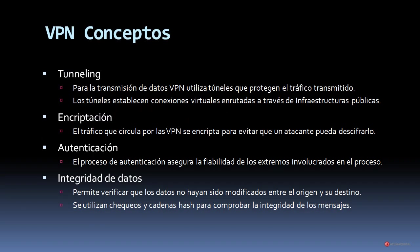Its main characteristics are confidentiality and security in transmissions. We will also review a series of concepts that are important for understanding how VPNs work, such as Tunneling. For data transmission, VPN uses tunnels that protect the transmitted traffic. The tunnels establish virtual connections routed through public infrastructures. For this, different technologies are used. One of them is encryption, which we have already seen previously.